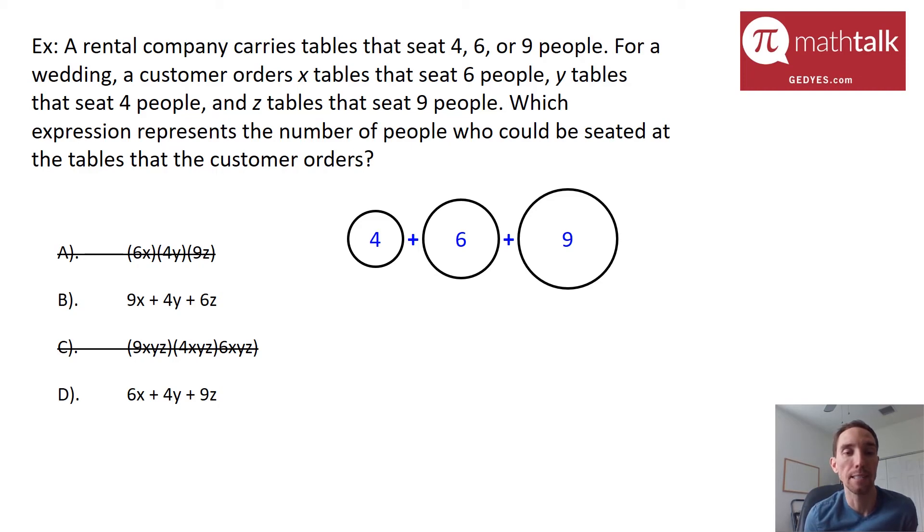Now, all we really need to do next is basically pair up the number of seats per table with the corresponding variable. Because whether there's one table of each, two tables of each, a mixture of tables, you're really taking that number four, six, or nine, and multiplying it by the number of those tables that you have, and then adding that quantity together.